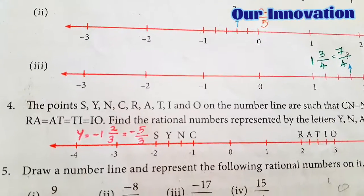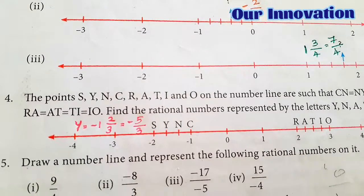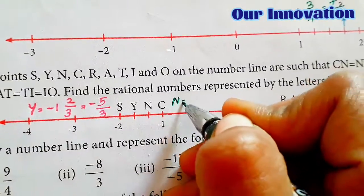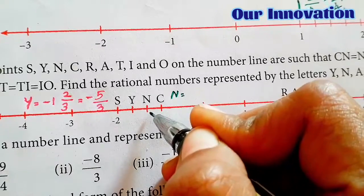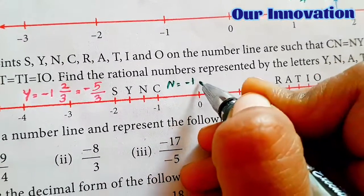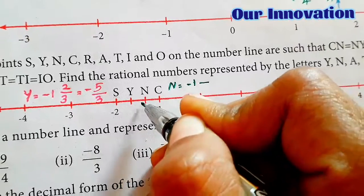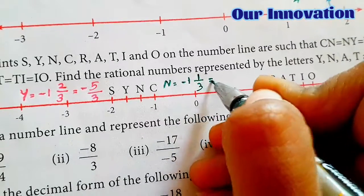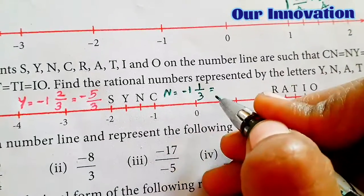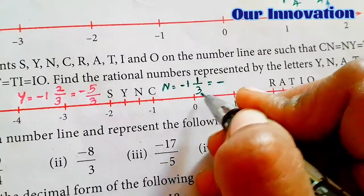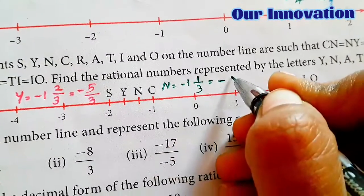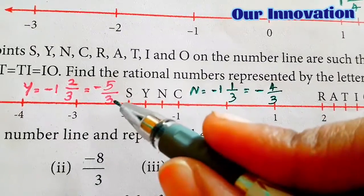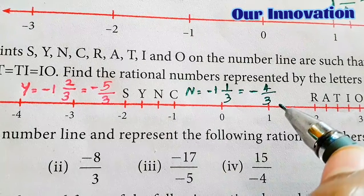Now find N. N is also between minus 1 and minus 2. Whole number minus 1, denominator 3. N is at the 1st position. Converting to improper fraction: minus 1 into 3 is 3, plus 1 is 4. So N equals minus 4 by 3. Y is minus 5 by 3 and N is minus 4 by 3.